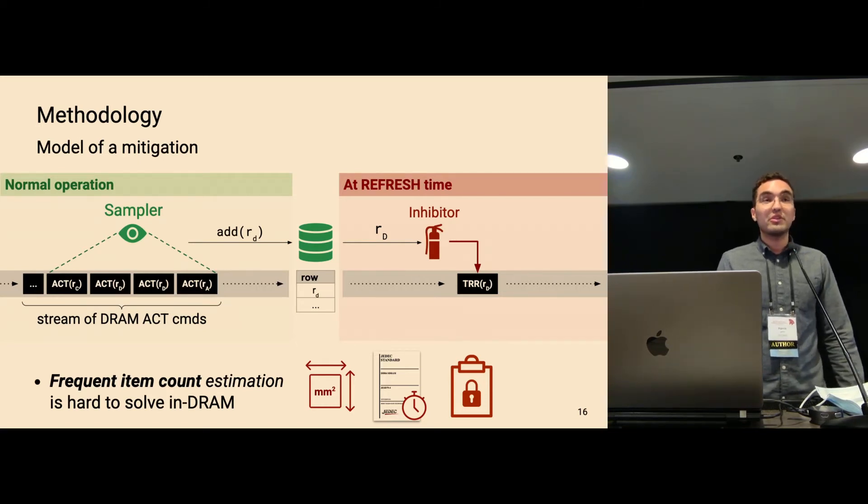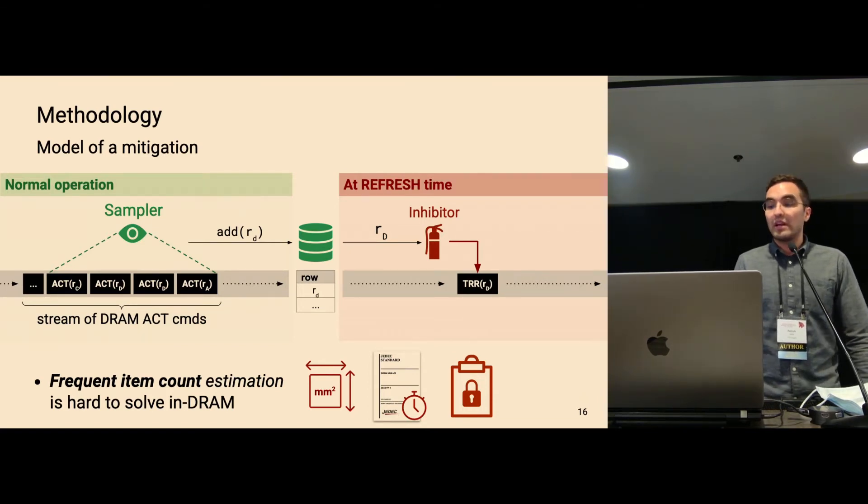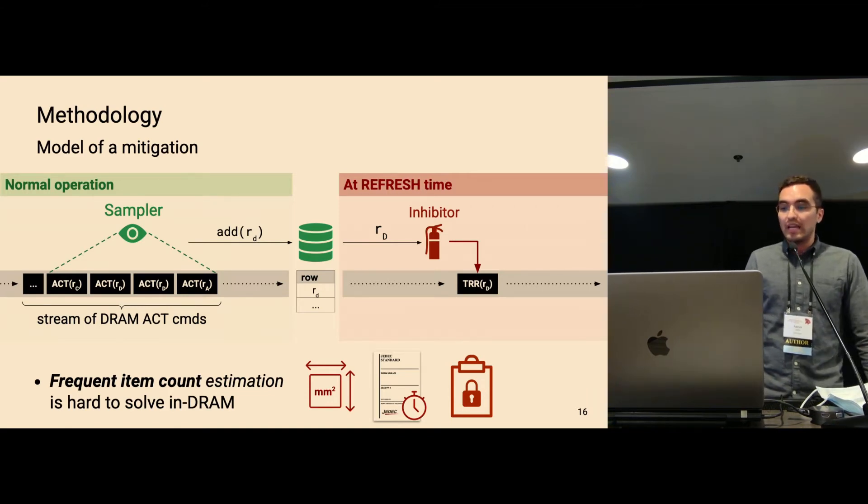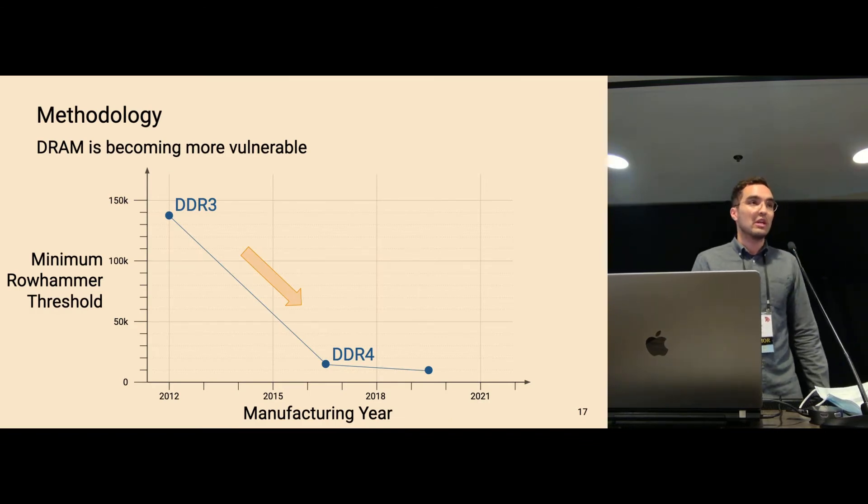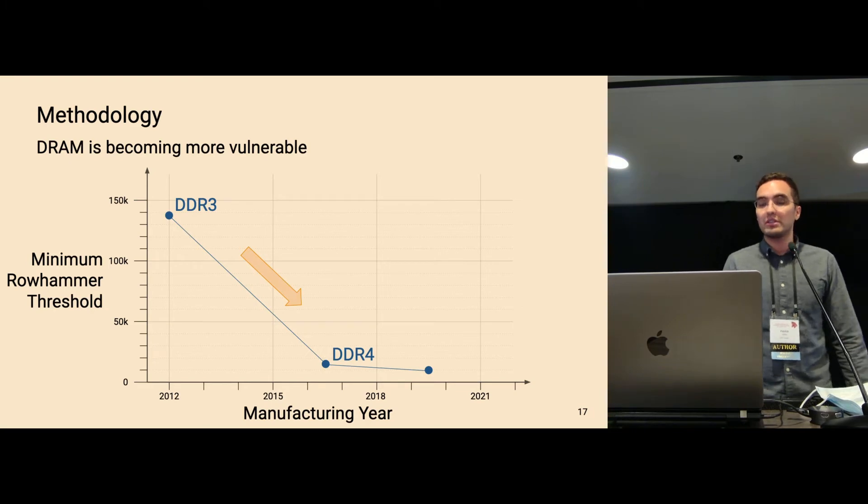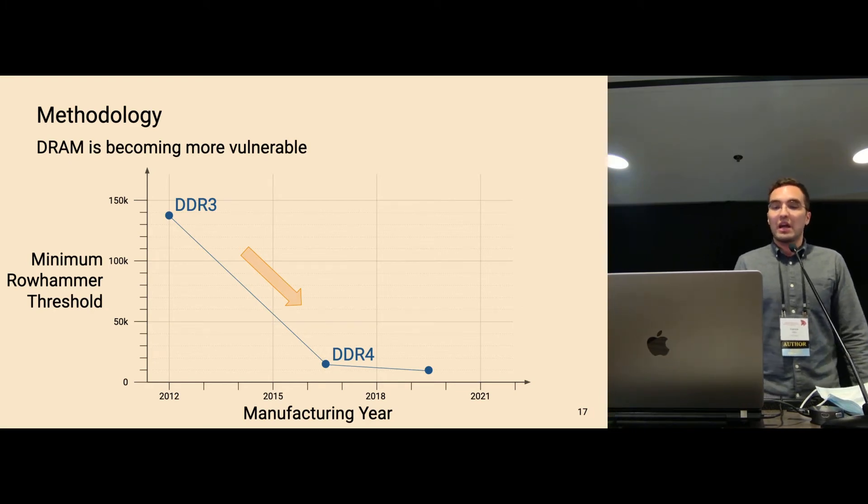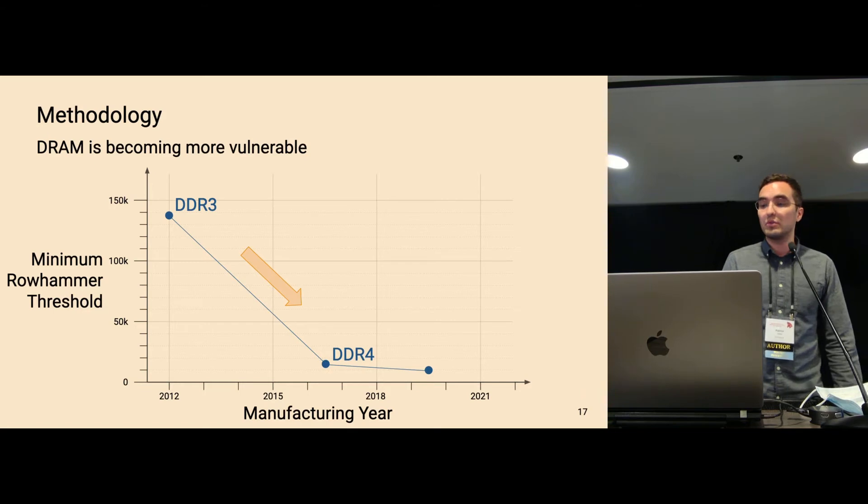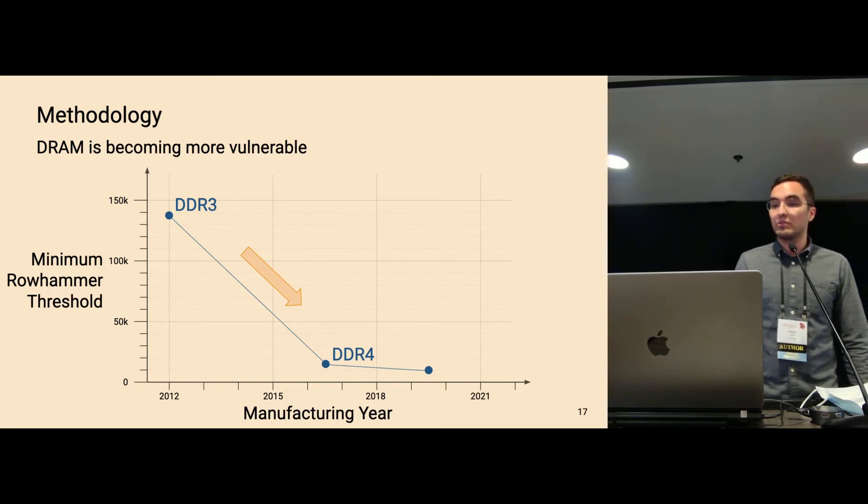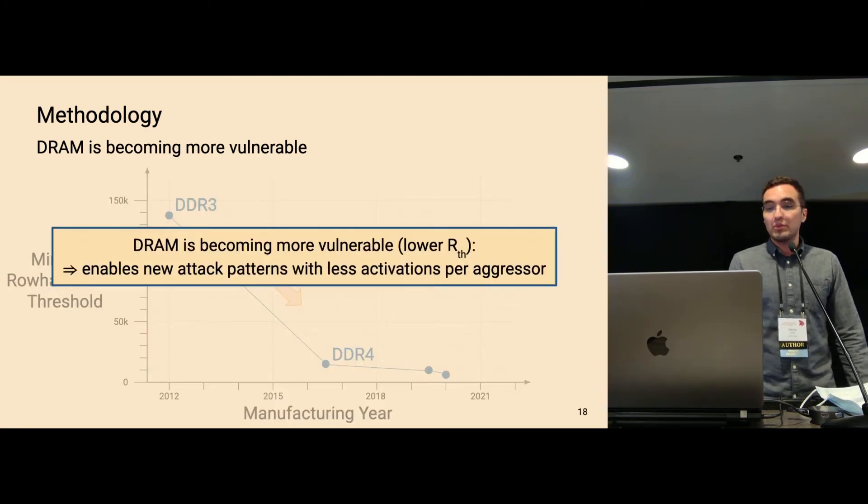And this problem of estimating the most frequently activated row is a well-studied problem solved by frequent item count algorithms. However, adapting those to DRAM devices is very challenging. Because in a DRAM device, we have limited area, so we cannot have a counter for each row. Then there are these timing requirements that I mentioned before. And existing mitigations are deployed in devices, lack of proper formal security analysis. Another point is that DRAM is becoming more vulnerable. So if you look back when Rowhammer was first discovered in 2012 with DDR3, around 139,000 activations were required to trigger bit flips. The newer devices using DDR4 produced in mid-2019 only require around 10,000 activations to aggressors to trigger bit flips. And this potentially allows us to craft new attack patterns where each of the aggressors is hammered less than before.